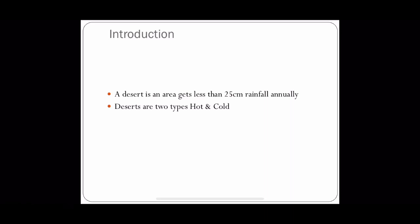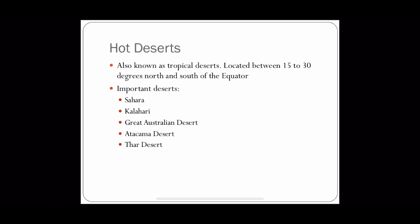Now we will discuss about hot deserts, which are also known as the tropical deserts, as they are located between 15 to 30 degrees north and south of the equator.